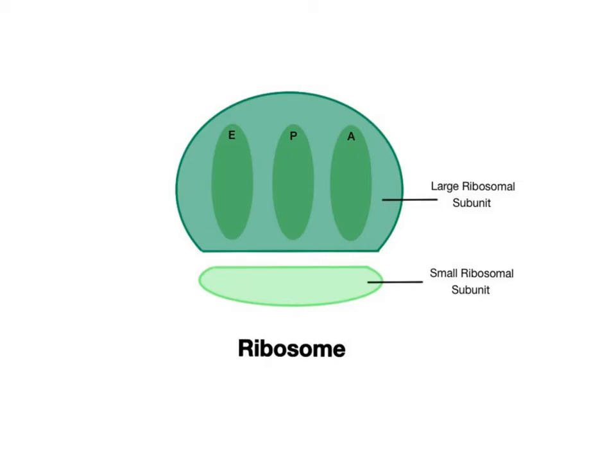The ribosomes are an exception to the other organelles, since they don't consist of membranes. They are instead ultramicroscopic particles made of proteins and ribosomal RNA, abbreviated rRNA.